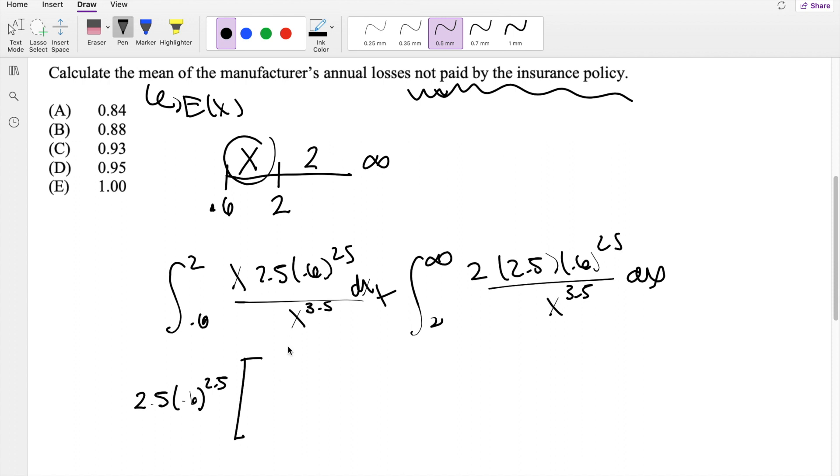In here, you get this is equal to going from 0.6 to 2, the integration of x times x to negative 3.5, so this is what you get. So with the exponent, you just add the exponents together, so you get this is technically x to the negative 2.5, right? x to the negative 2.5, dx, plus going from 2 to infinity, and you're left here with 2 times x to the negative 3.5, dx.